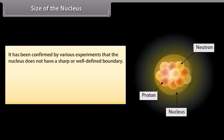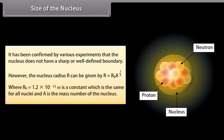Size of the nucleus: It has been confirmed by various experiments that the nucleus does not have a sharp or well-defined boundary. However, the nucleus radius R can be given by R is equal to R not into cube root of A, where R not is equal to 1.2 into 10 raised to the power minus 15 meters, is a constant which is the same for all nuclei, and A is the mass number of the nucleus.